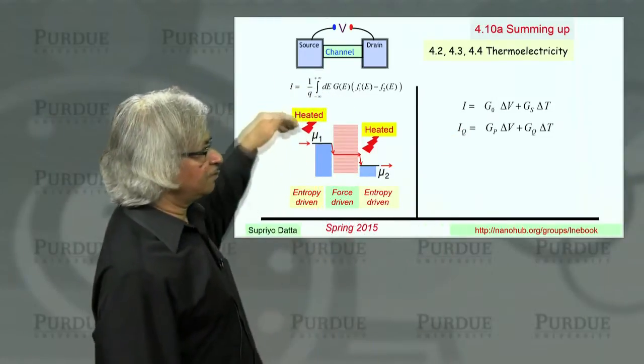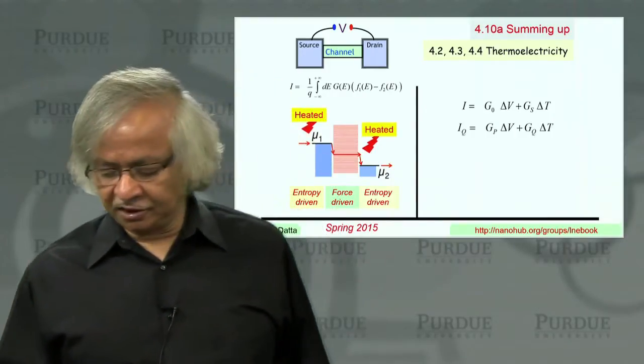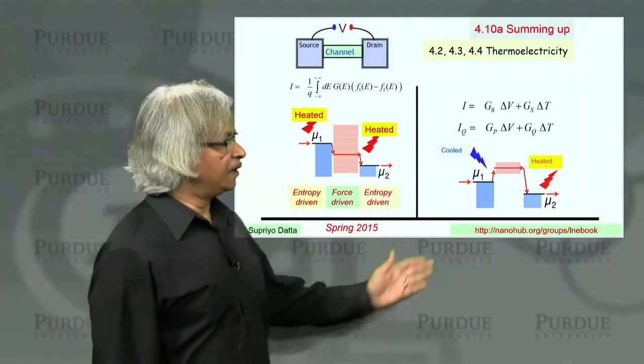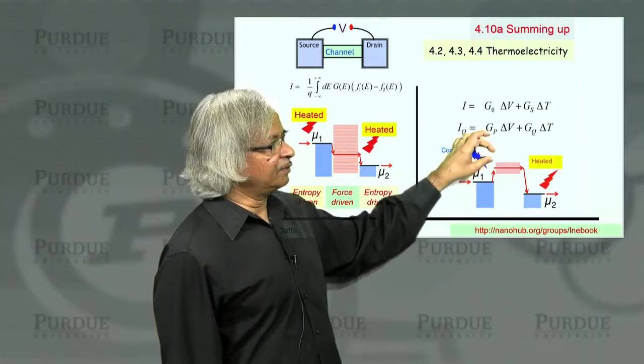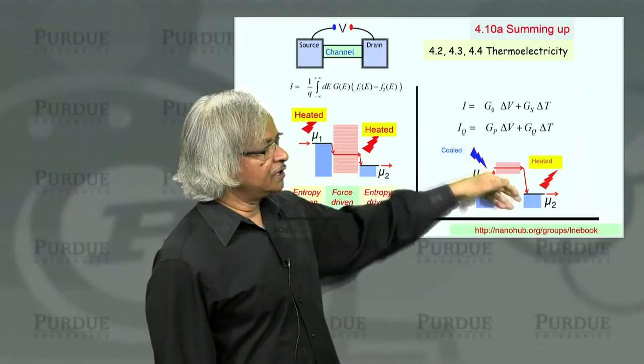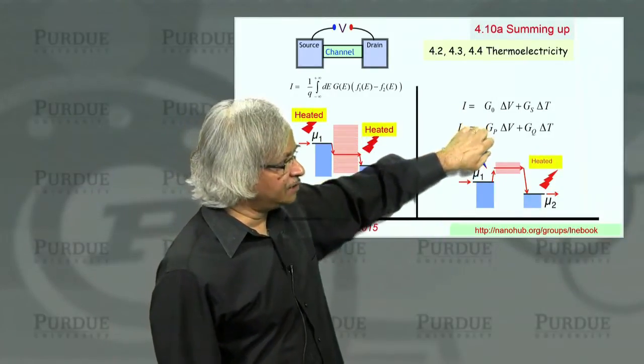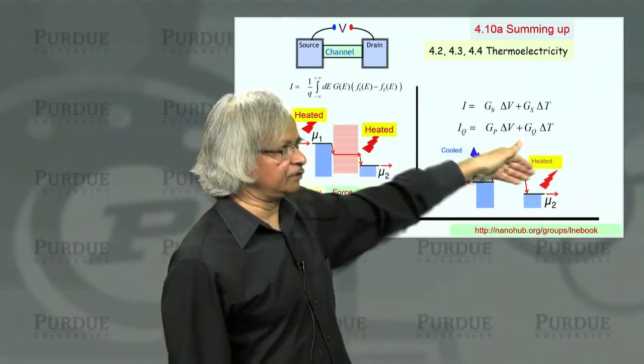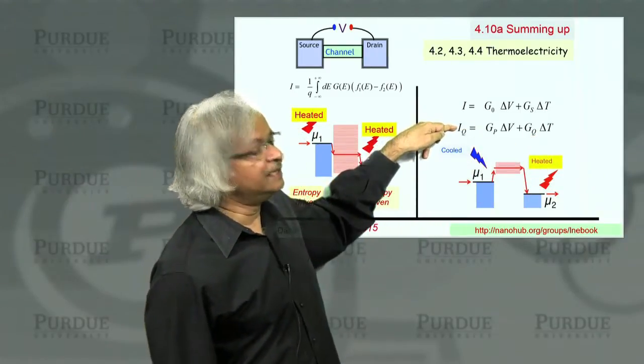Usually, of course, when current flows, you have joule heating. But depending on the structure, you can also have a heat current flow. Namely, if you had a device looking like this, where the available conduction channels are, say, above mu, then when current flows, you actually cool one contact. That is, you take heat from this contact and dump it out there, which means you actually have a heat current that flows. And so that was the equation for that heat current.